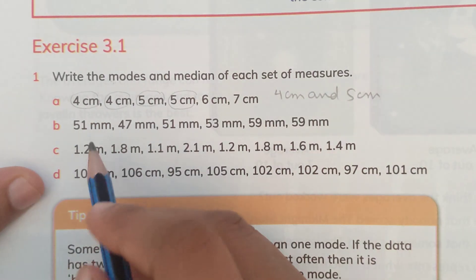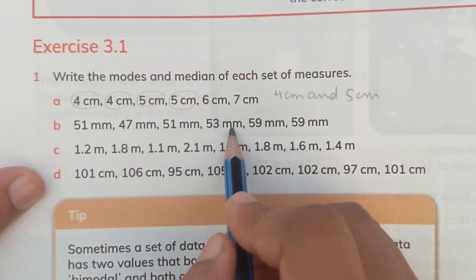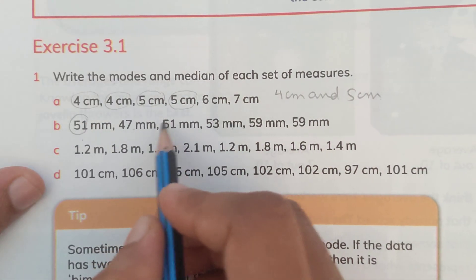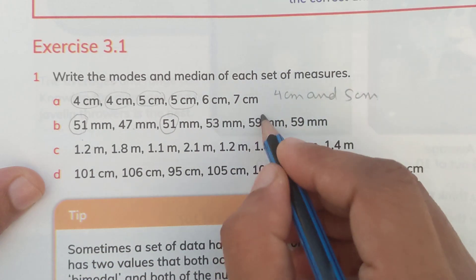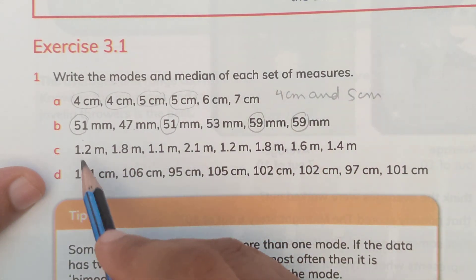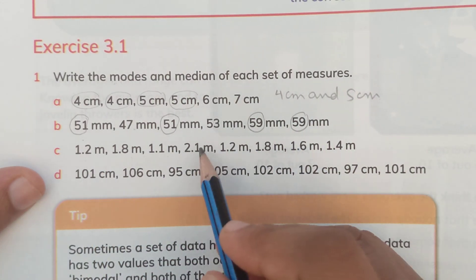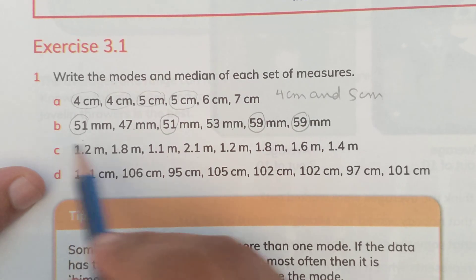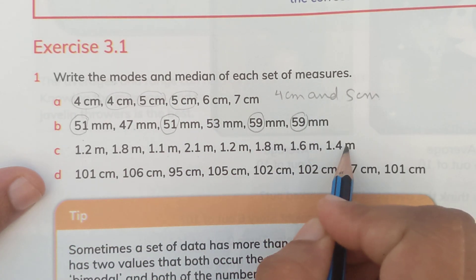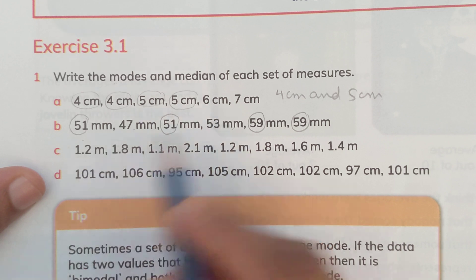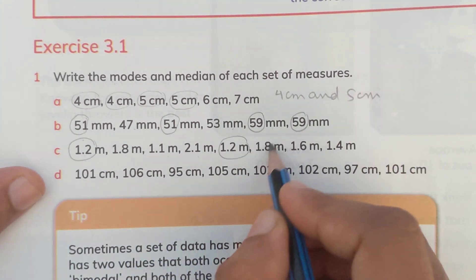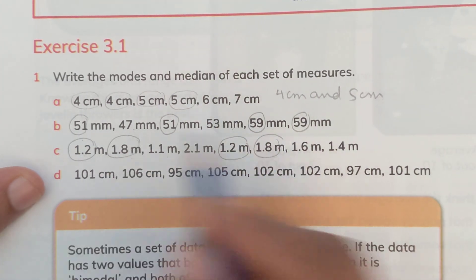In the next set of data we have 51, 47, 51, 53, 59, 59. Again, two numbers are getting repeated: 51 and 59. So 51 and 59 are the modes. Then in part C: 1.2, 1.8, 1.1, 2.1, 1.2, 1.8, 1.6, and 1.4. Here 1.2 is repeating and 1.8 is also repeating, so the modes are 1.2 and 1.8.